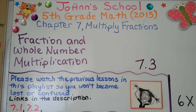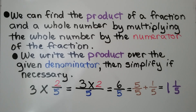Lesson 7.3: Fraction and Whole Number Multiplication. We can find the product of a fraction and a whole number by multiplying the whole number by the numerator of the fraction. We write the product over the given denominator, then simplify if necessary.